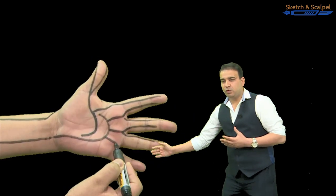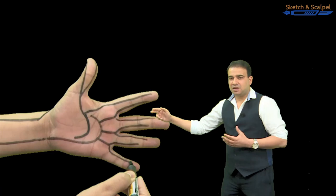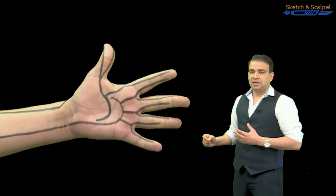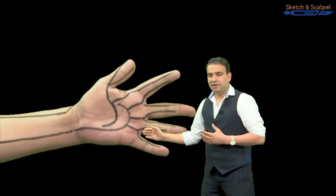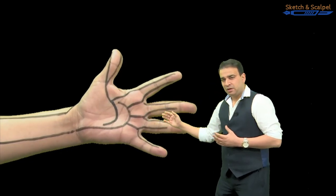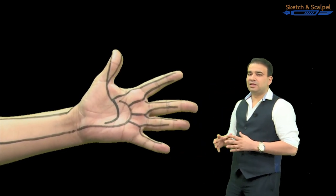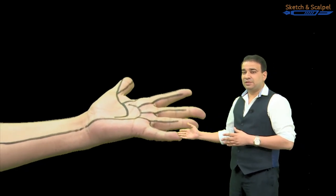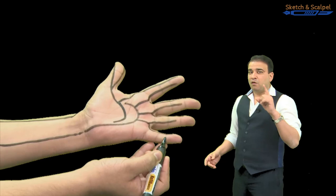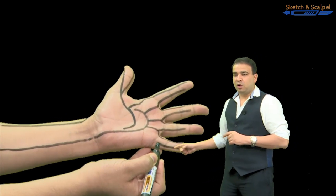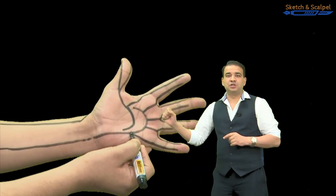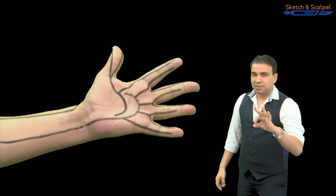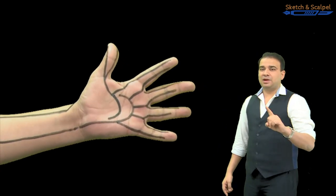These branches are called proper digital arteries. So we have three common digital arteries here, and now we have the proper digital arteries supplying all the remaining web spaces. Still something is left—that is the ulnar side of the little finger. So we have one proper digital artery coming all the way directly from the superficial palmar arch. Three common digital but one proper digital artery.